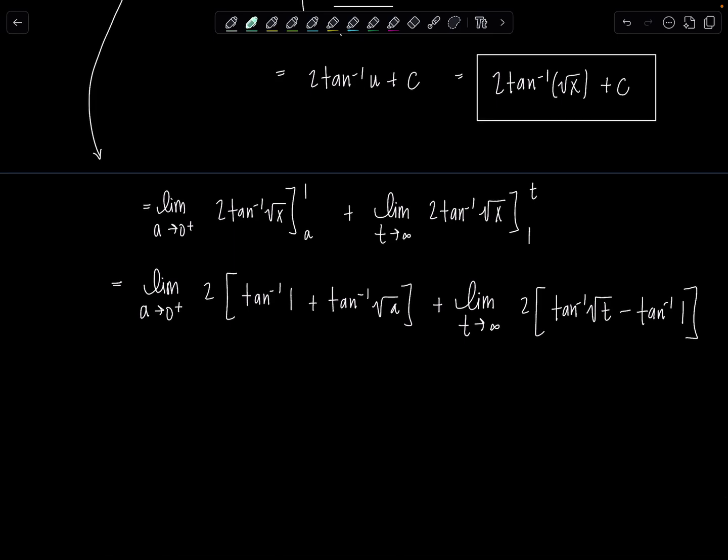We can do both of these at the same time. I think it's fine. Limit a goes to zero from the right, let's keep the two out. This is going to be tan inverse of rad one is still one. Tan inverse of rad a plus limit T goes to infinity two times. This is tan inverse rad T minus tan inverse of one. Okay, beautiful. So let's see. Tan inverse of one, that's just pi over four.